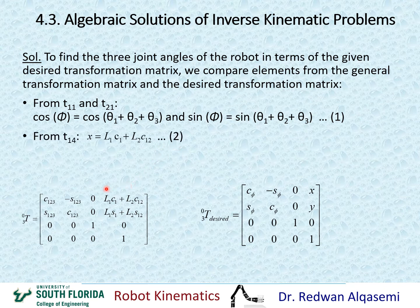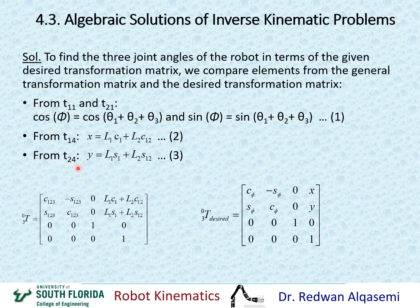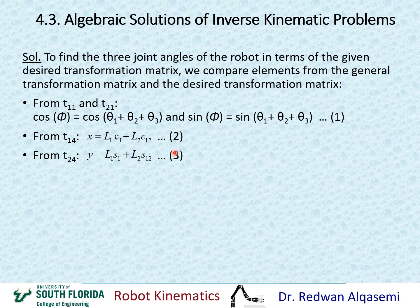Then from T14 (first row, fourth column), X equals L1*C1 + L2*C12 — this is equation number two. The third equation comes from T24 (second row, fourth column): Y equals L1*S1 + L2*S12. I'll now remove the two matrices and work with these three equations to solve for the three unknowns: theta1, theta2, and theta3 in terms of X, Y, and phi.